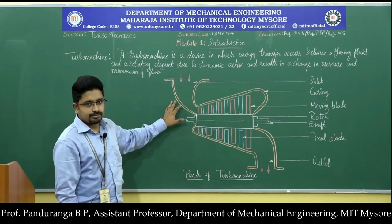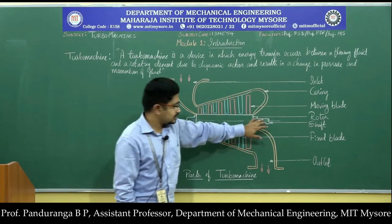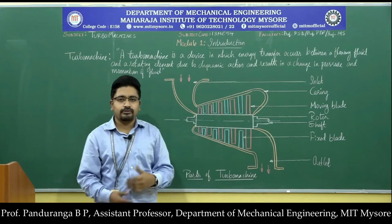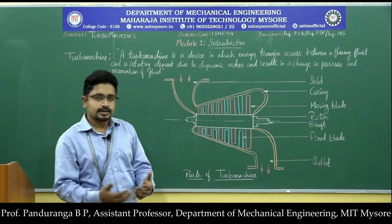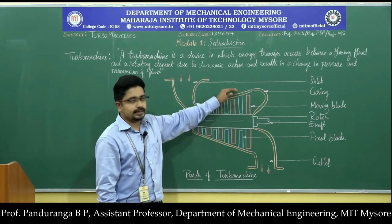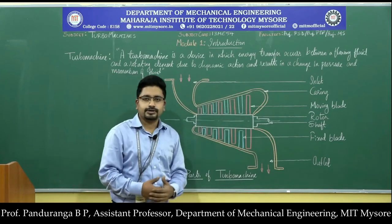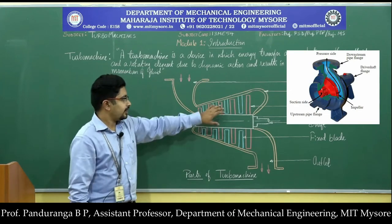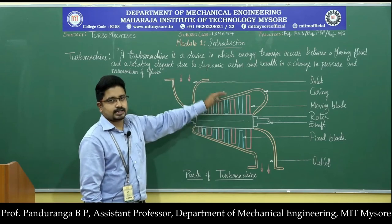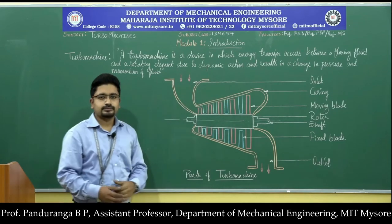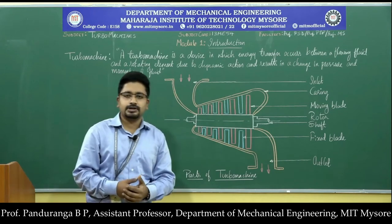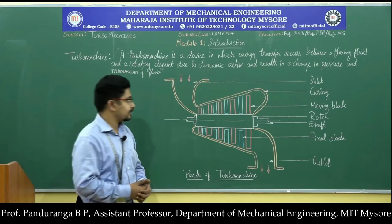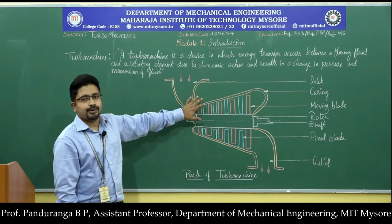These are the parts of the turbo machine. The major parts are the shaft, rotor or hub, and the moving blade — these three will be present in all turbo machines. In some cases we may have stationary blades and casing. The best example is centrifugal pumps used in daily life, where the stationary blade and casing provide the proper direction for the water to flow — drawn from the sump and delivered to the overhead tank.